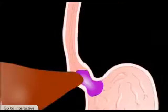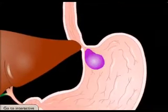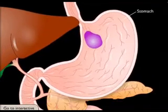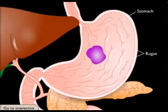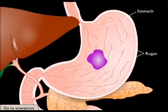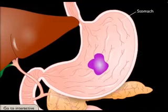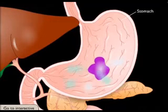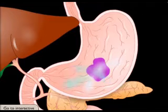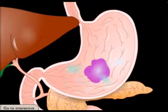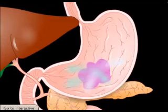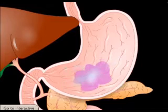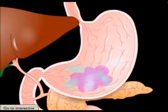The bolus now enters the stomach. Folds in the stomach wall, called rugae, allow for expansion as the stomach fills. Stomach cells secrete hydrochloric acid, pepsinogen, and various regulatory hormones that chemically digest the bolus.